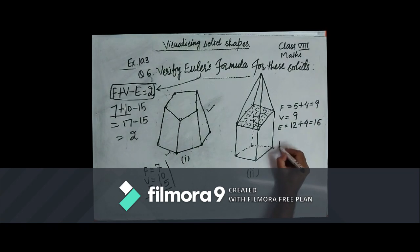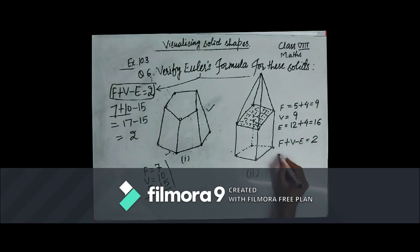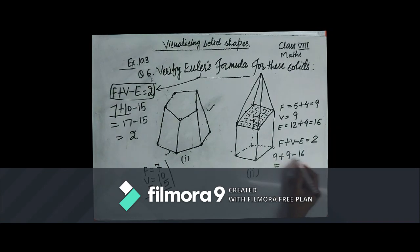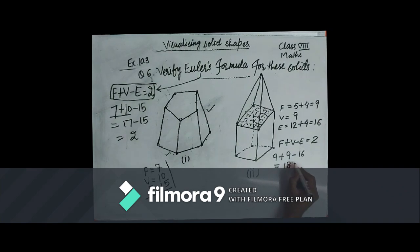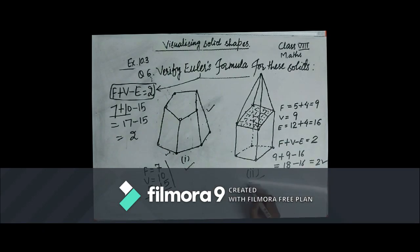Let us put all the entries into Euler's formula: F plus V minus E equals 2. Number of faces is 9, number of vertices is 9, and number of edges is 16. So 9 plus 9 minus 16 equals 18 minus 16, which equals 2. Hence, both diagrams verify Euler's formula.